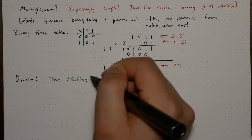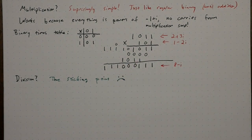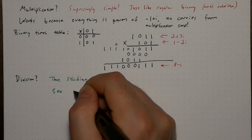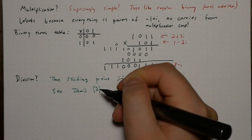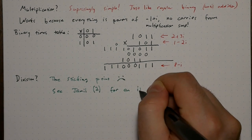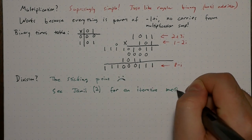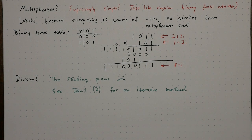What about division? Well, there's the sticking point. Apparently, there was some interest in using complex bases in computers to speed up complex arithmetic. But division turned out to be far too unpleasant. See the paper by Jamil for an iterative method.